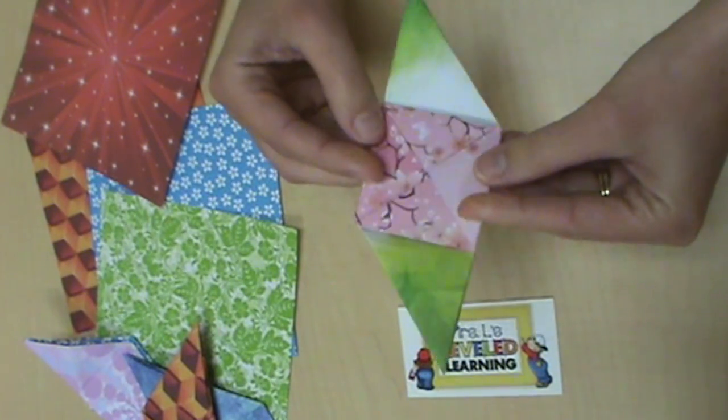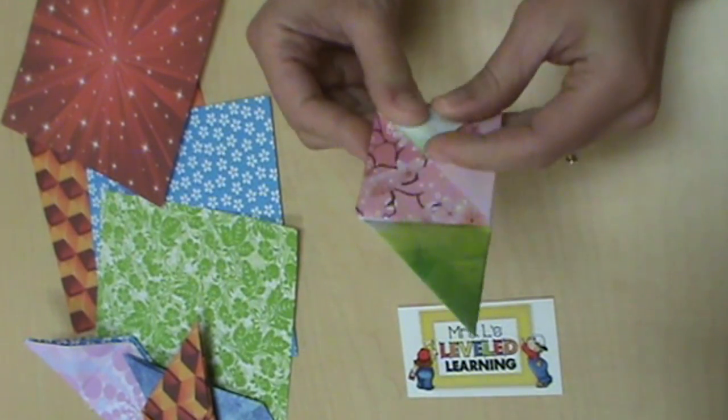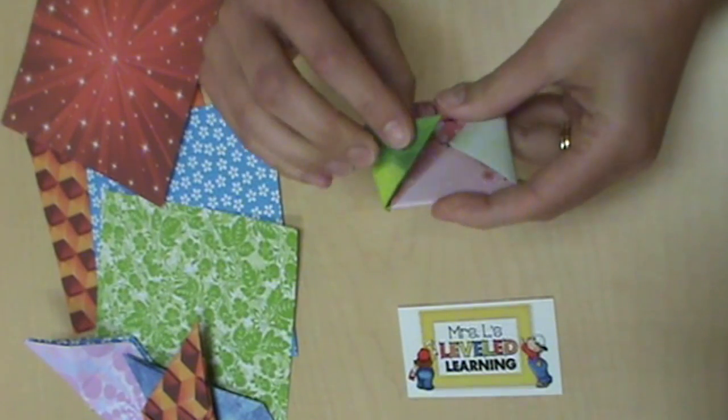Flip it over, and your other triangular corners become like arms that wrap around and tuck into the opposite pocket.